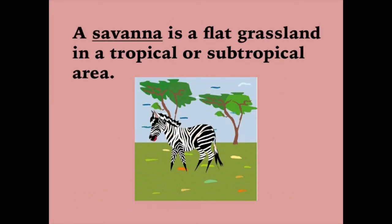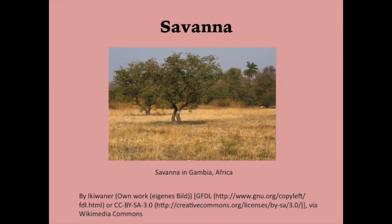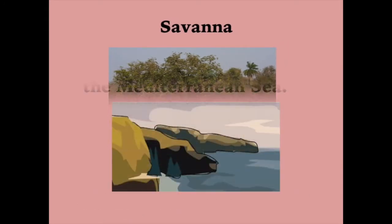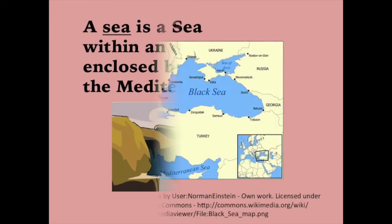A savanna is a flat grassland in a tropical or subtropical area. A sea is a region of water within an ocean and partly enclosed by land, such as the Mediterranean Sea.